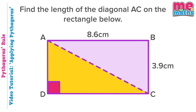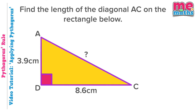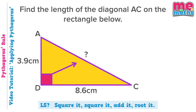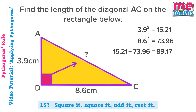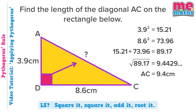You know the drill well by now. Check first of all: are we looking for the hypotenuse? We are looking for the side opposite the right angle, so yes we are trying to find the hypotenuse. Square it, square it, add it, root it — that's the rule we're going to use. So square our two sides first, add them together, root and round. And there we go, we've found the length of AC as asked for in the question.